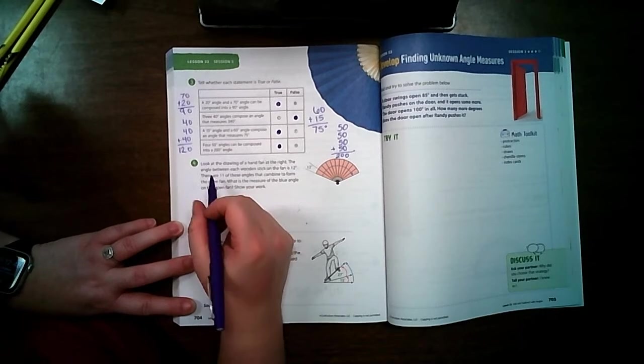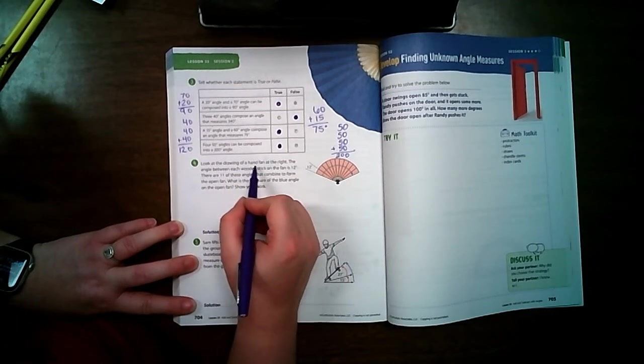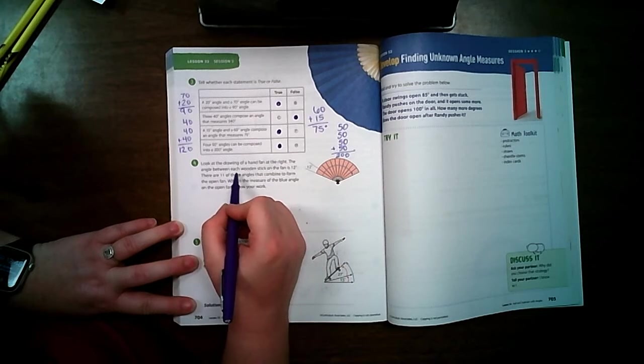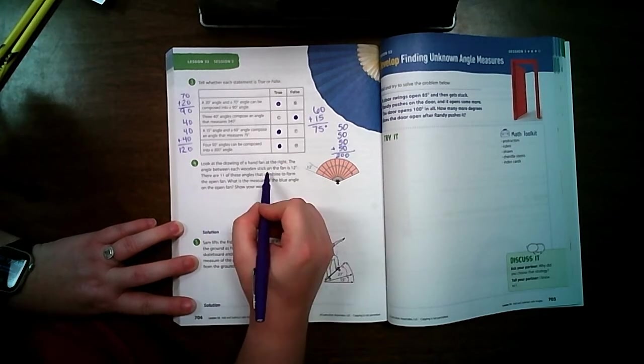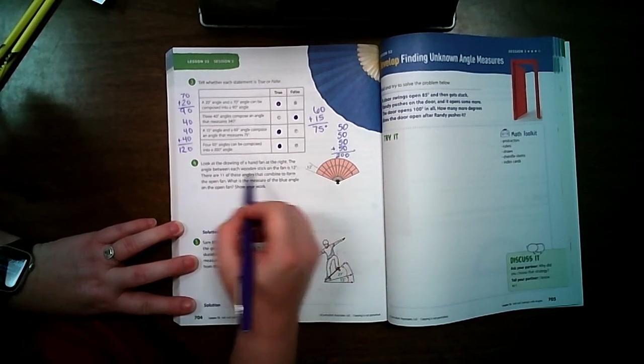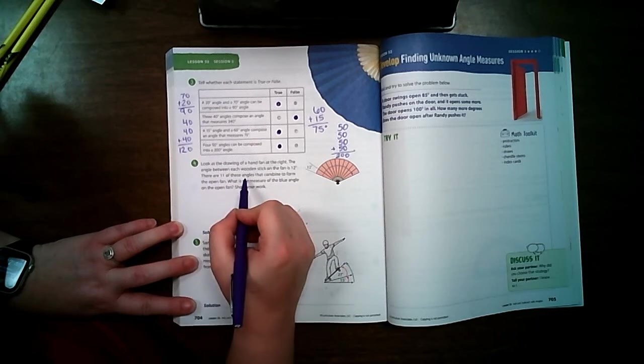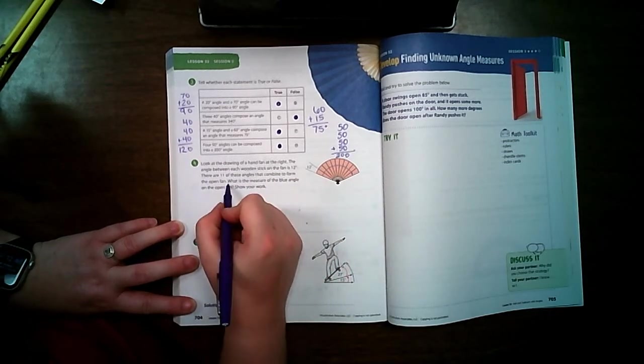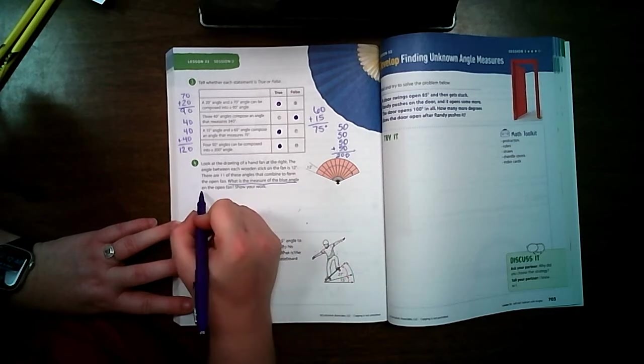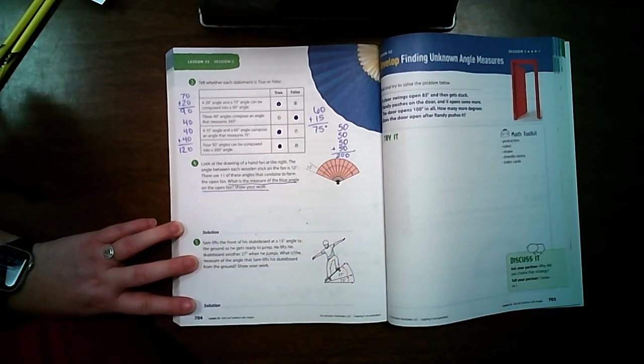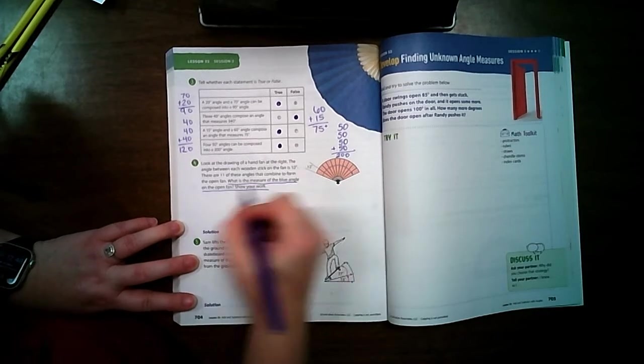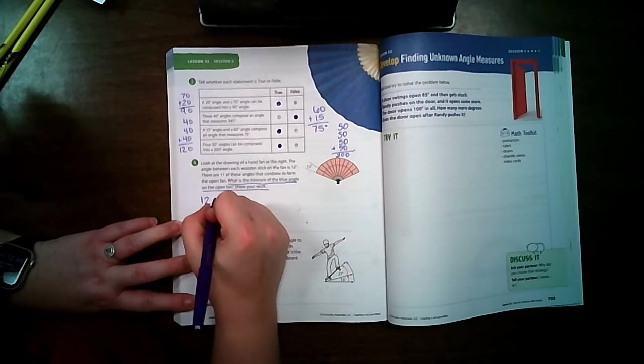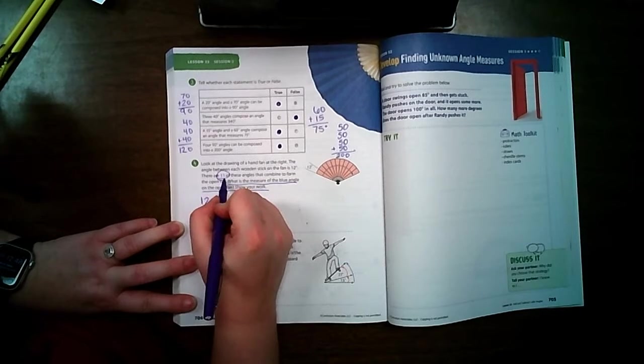Number four. Look at the drawing of a hand fan at the right. The angle between each wooden stick on the fan is 12 degrees. There are 11 of these angles that combine to form the open fan. What is the measure of the blue angle on the open fan? Show your work. So we know each one of them is 12, and it says that there is 11 of them.